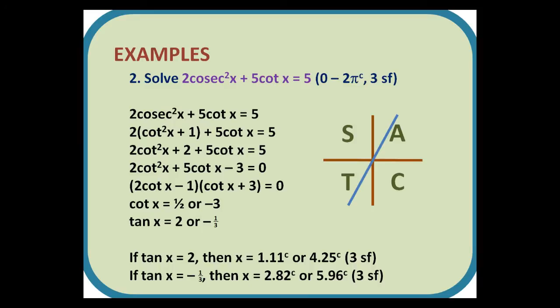So, 2cosec²x + 5cot x = 5. We replace the cosec²x with cot²x + 1, and then we multiply out the brackets, rearrange it to get a quadratic of 2cot²x + 5cot x - 3 = 0. We factorize it, and then we say that cot x is 1/2 or -3. Reciprocating gives us tan x = 2 or -1/3. If tan x = 2, then x is 1.11 radians, add on π to get 4.25 radians. If tan x is -1/3, we start off with a negative value, add on π to get 2.82 radians or 5.96 radians.